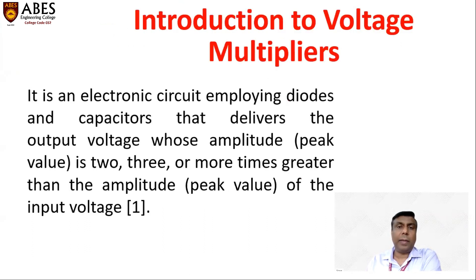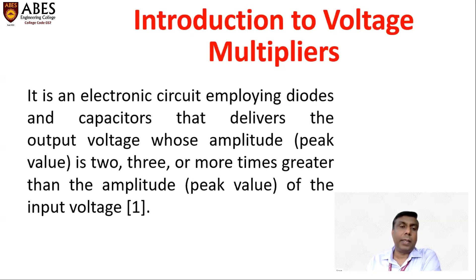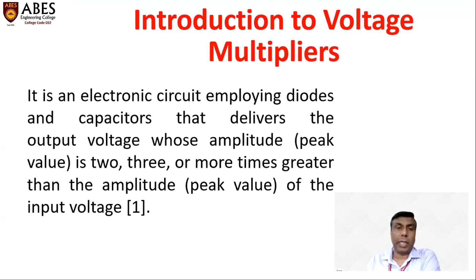The voltage multiplier is one of the most important applications of a P-N junction diode. The voltage multiplier gives output voltage in multiples of the peak value of amplitude of input voltage. It means voltage multipliers give 2 times, 3 times, or more times greater than the peak value of amplitude of input voltage.